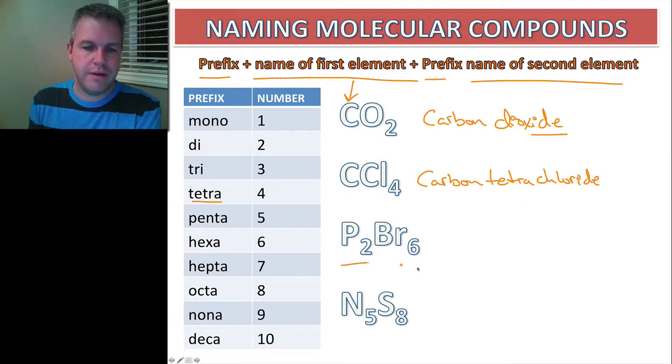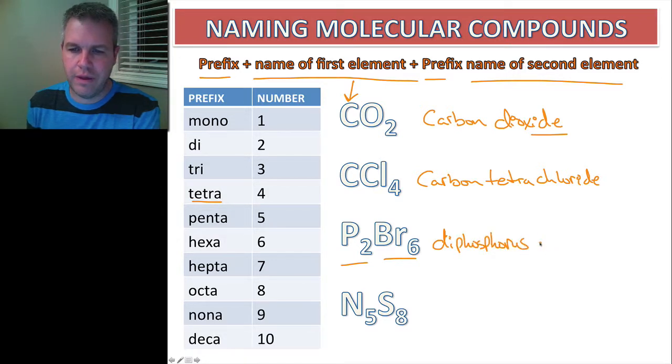Okay, here we go, P2Br6, so this is diphosphorus hexabromide.